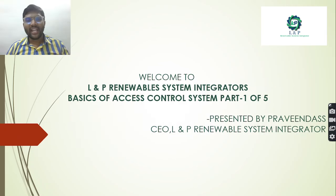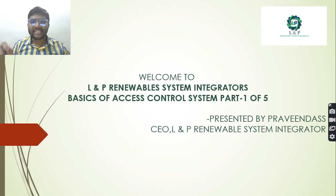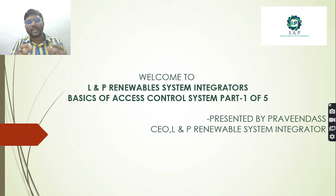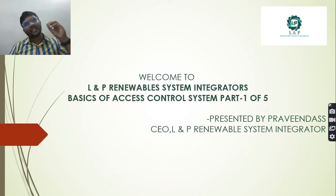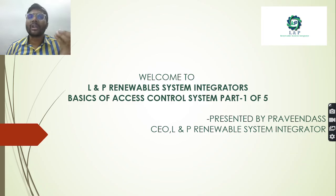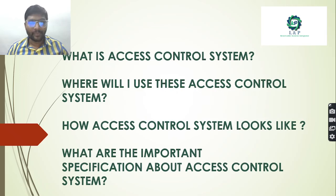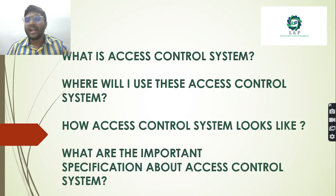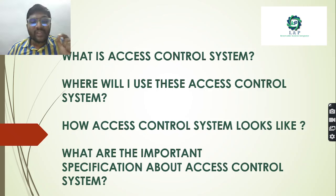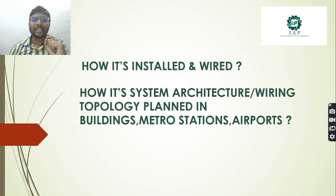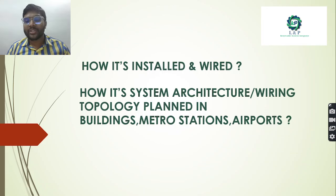Welcome to LNPL Noble System Indicator. Today we are going to discuss some of the basics of access control system. This session is classified into five different parts. In part one, we will discuss basics in general, and in the other parts, company-wise specifics. We will try to learn controller basics, especially the hardware side, covering topics like what is an access control system, where it is used, how it looks, its important specifications, how it is installed, and its wiring topology in buildings, metro stations, and airports.